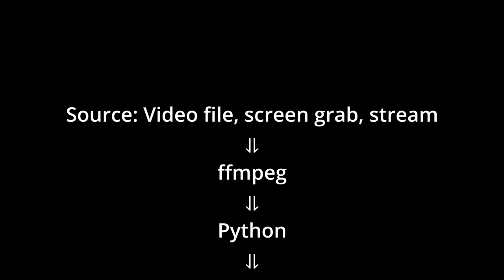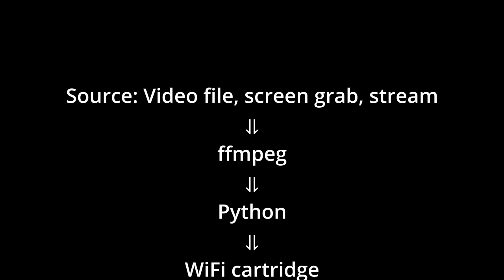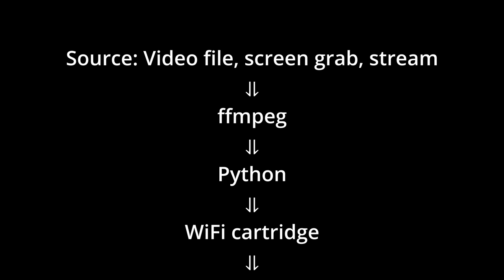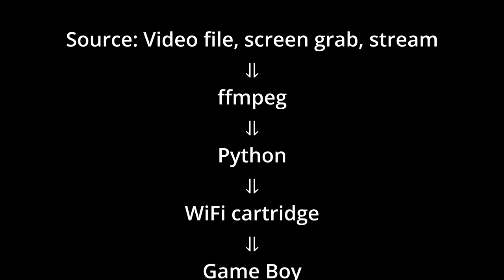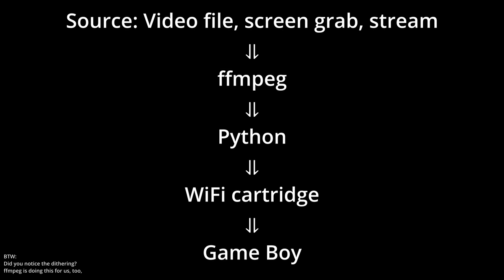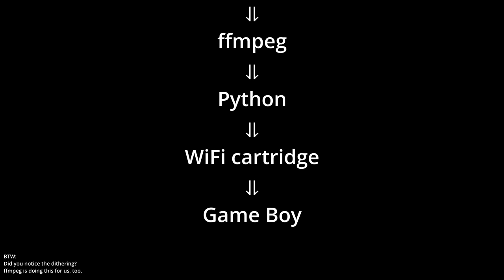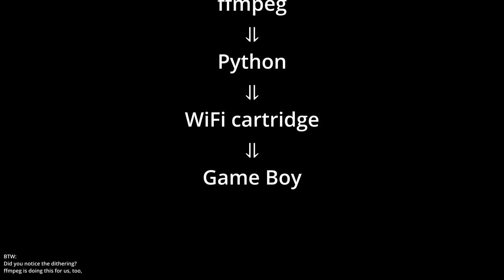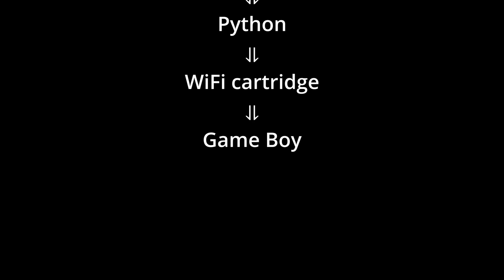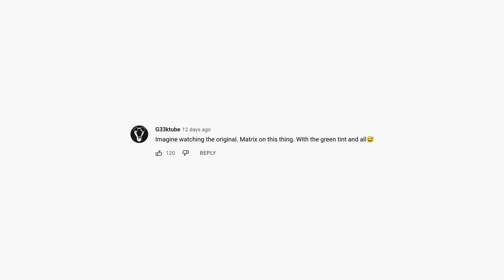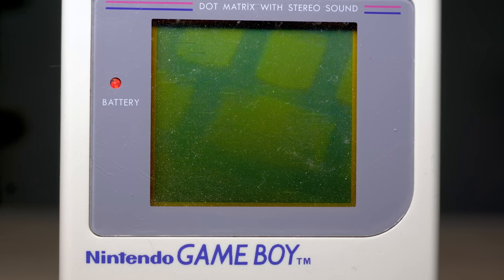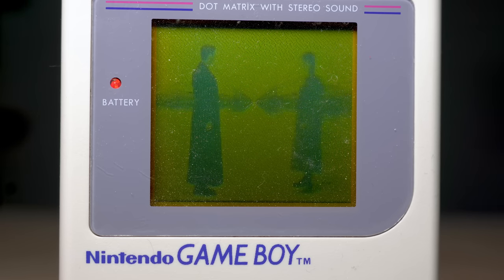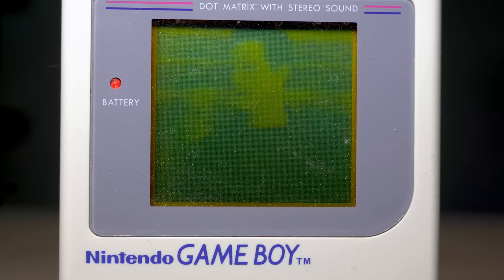That's enough theory. Let's fire up a Python script that takes any video source from FFmpeg, reorders the bits to match the tile data order, and streams it to the cartridge. It's time to look at some of your requests. The Matrix — the way it was meant to be seen. Well, at least the color scheme seems quite right.